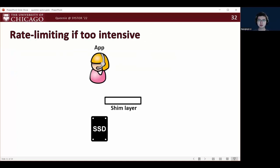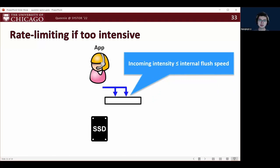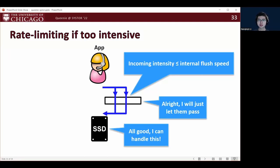So, here is a simplified visualization. First of all, the shame layer actively monitors the incoming write intensity. If the incoming write intensity is not greater than the SSD's internal flush speed, it means that the SSD should be perfectly comfortable handling the workload. Then, the shame layer does not need to do anything, and the application can get good latencies.